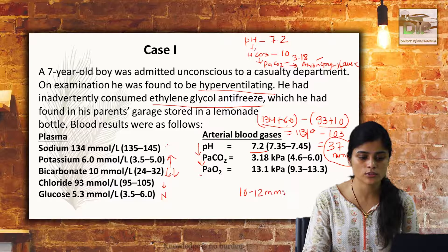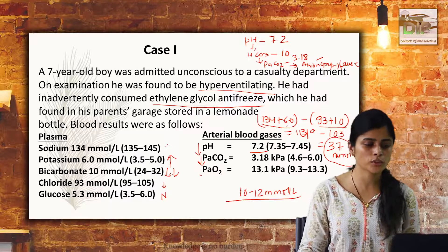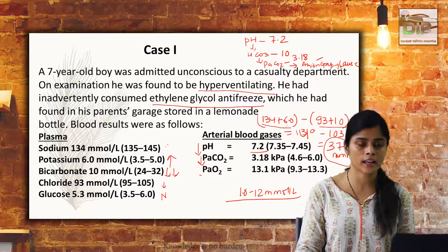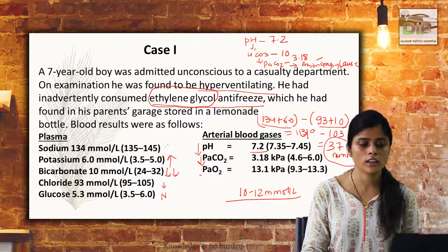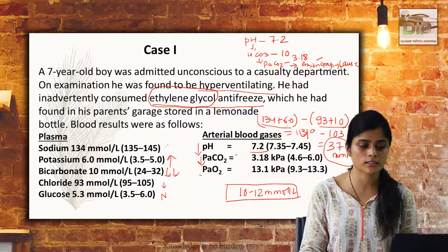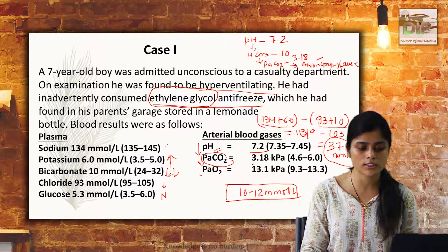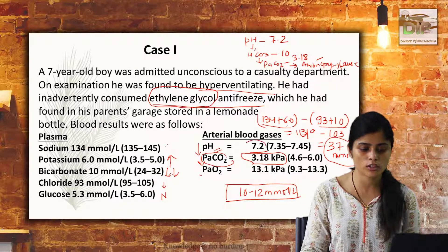The normal anion gap is 10 to 12 millimole per litre. As I have already discussed, one of the causes for high anion gap acidosis is ethylene glycol poisoning. Here, because of the ethylene glycol, there is accumulation of more anions, there is a decrease in pH, and PaCO2 is also decreased where it is trying to compensate. It is partly compensated since the pH has not come to normal.